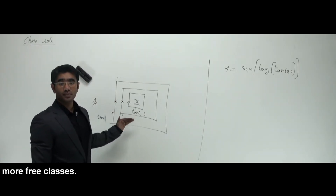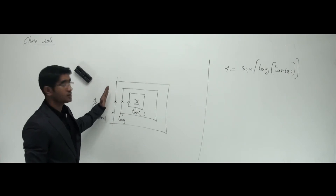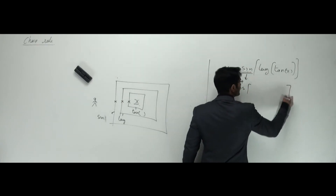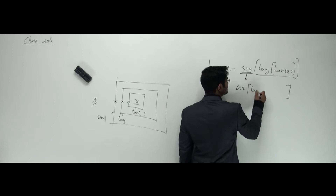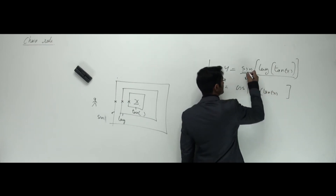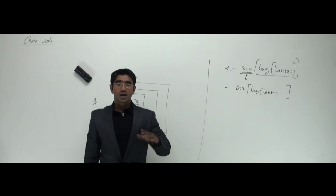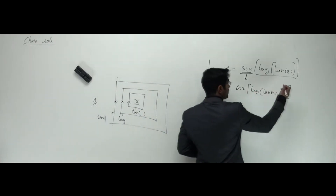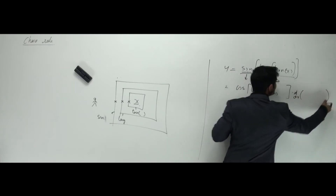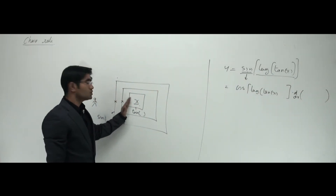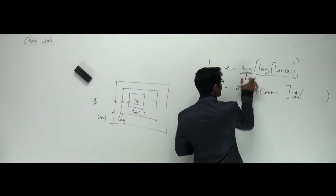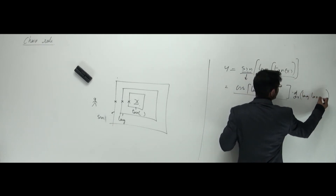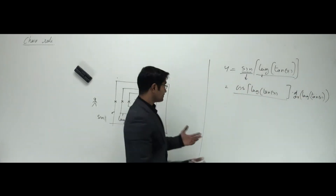To solve this, first break the outermost function. We break sine, and it becomes cos. Whatever is inside stays — just write it as it is. I'm differentiating sine to get cos, and whatever was inside, log(tan x), remains. I've broken the outermost wall; I still need to break the log and tan walls.